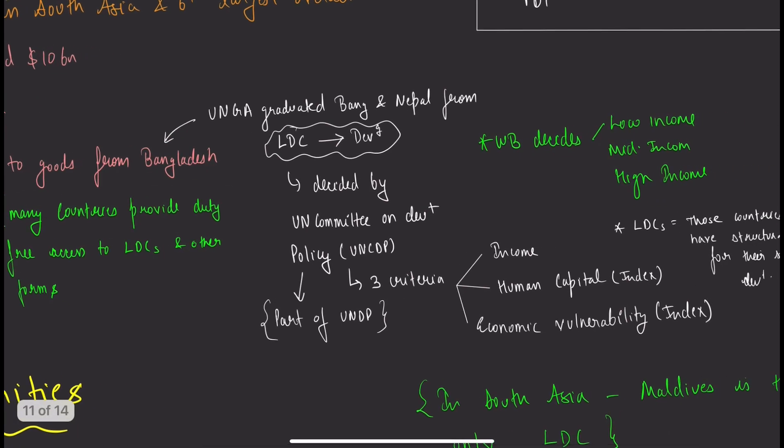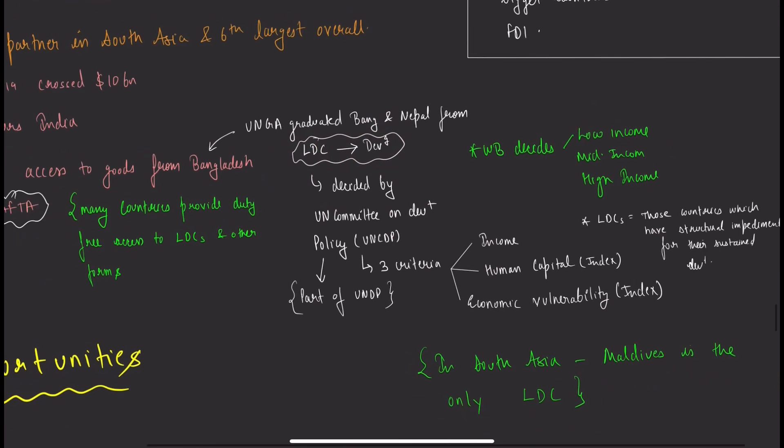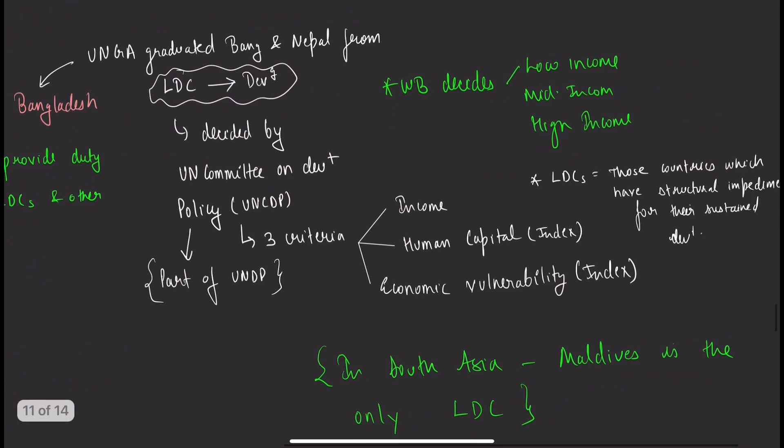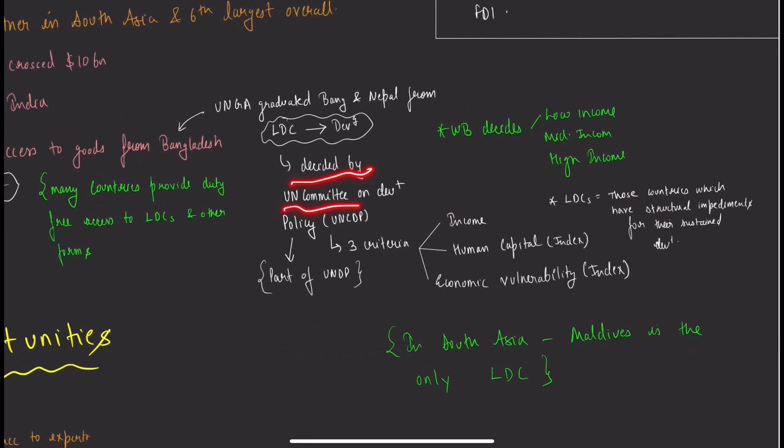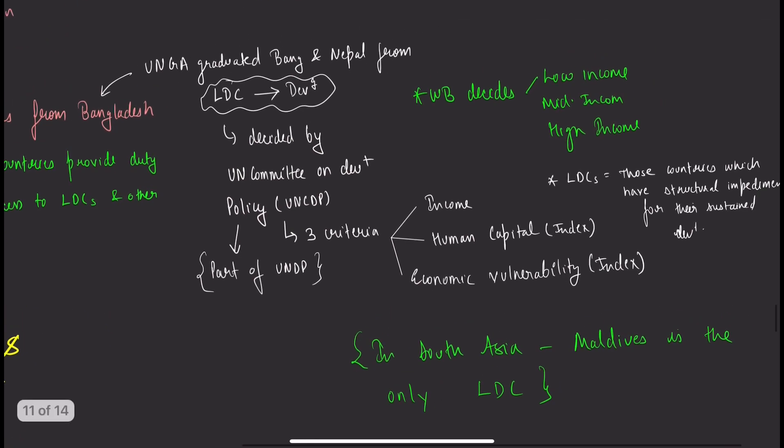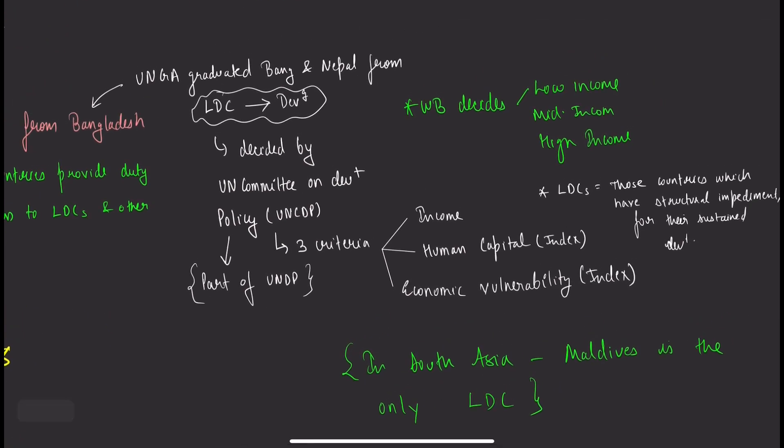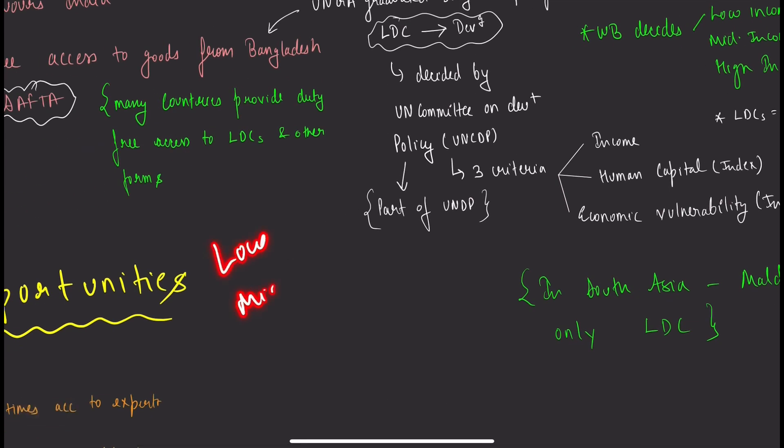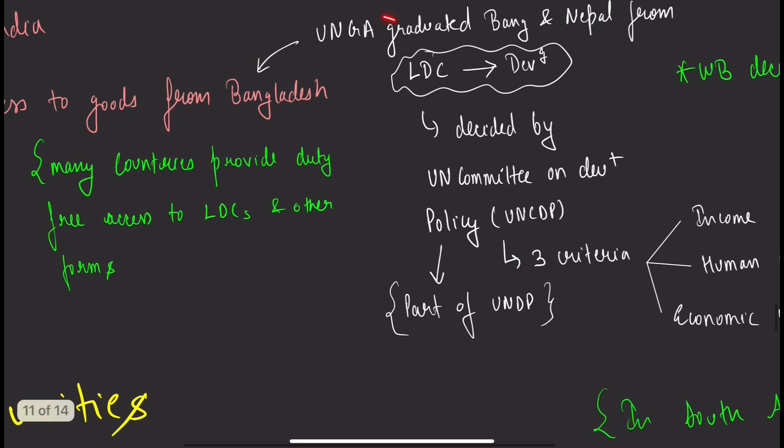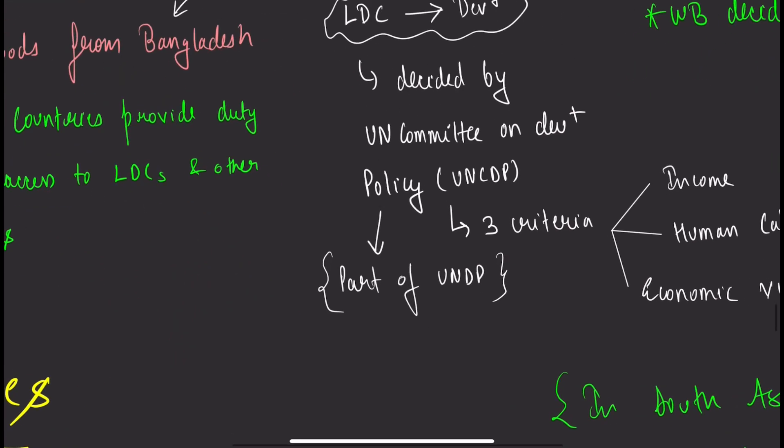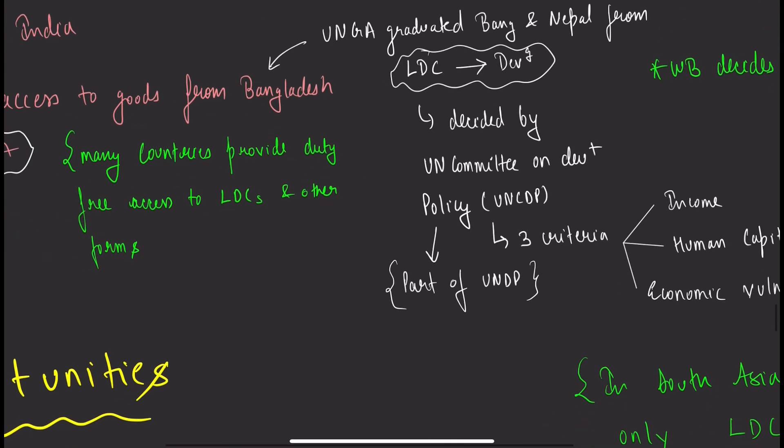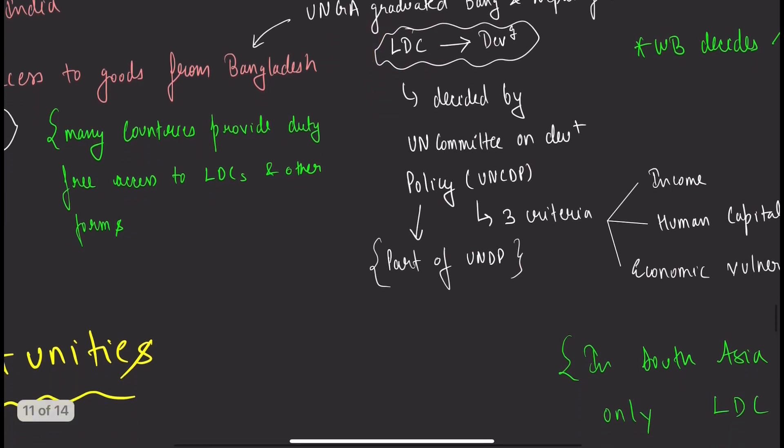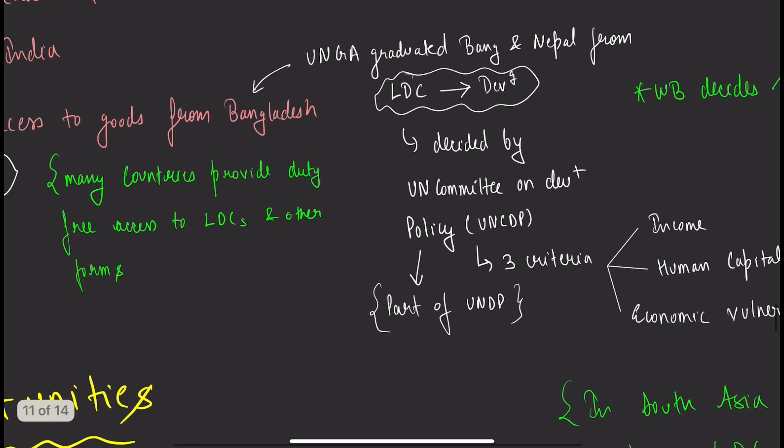Recent news: Bangladesh graduated from least developing country to developing country, decided by the UN Committee on Development Policy. Don't confuse this with World Bank, which decides income categories. Three criteria are used: income, human capital, and economic vulnerabilities. In South Asia, only the Maldives remains as a least developed country.